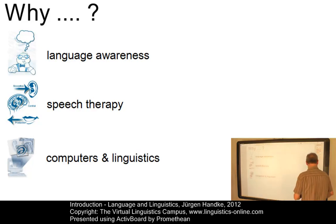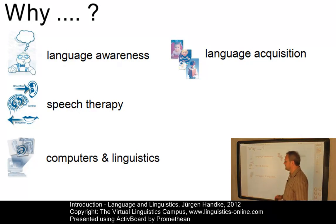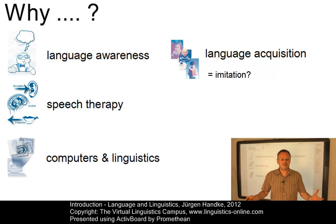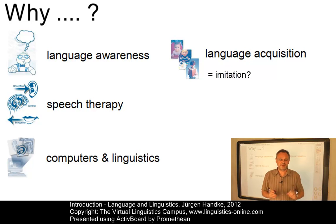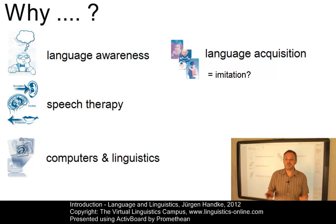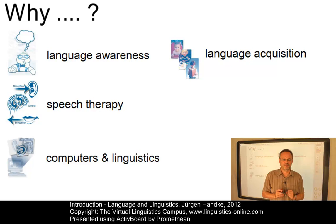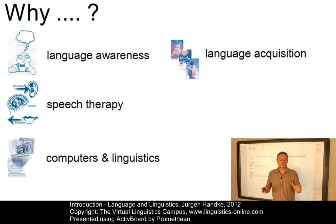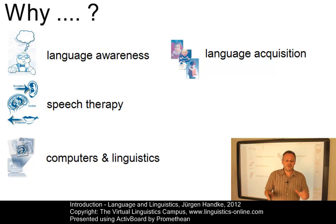And what about children? How do children manage to learn a language so easily? Do they perhaps imitate their parents? That would not be very good, because parents and near relatives often use a sort of special baby talk. Still, children acquire their native tongue. Language acquisition is an important linguistic subfield that seeks to find out the main principles of this process.